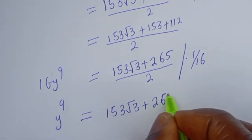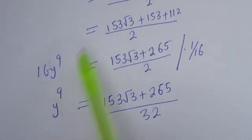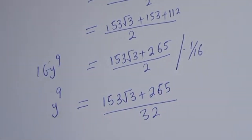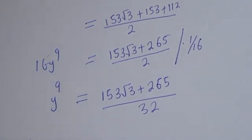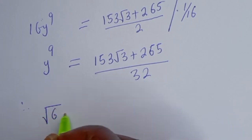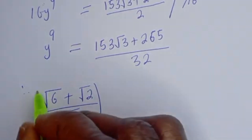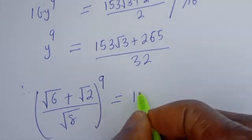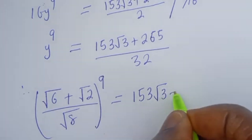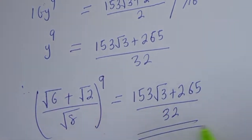Since y is our original expression, the final answer is: ((√6 + √2) / √8)⁹ = (153√3 + 265) / 32. This is the final answer. I hope you enjoyed the video — please don't forget to like, share, comment, and subscribe to my channel. Thank you, bye bye!